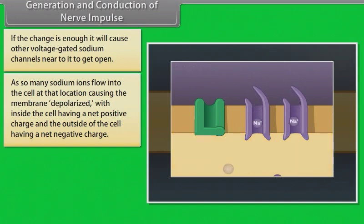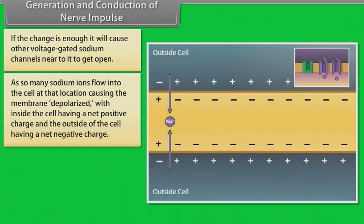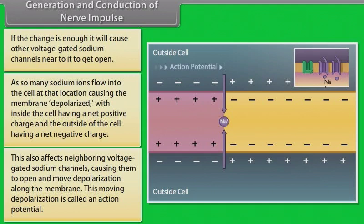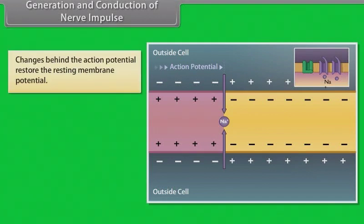As so many sodium ions flow into the cell at that location, the membrane becomes depolarized, with the inside of the cell having a net positive charge and the outside having a net negative charge. This also affects neighboring voltage-gated sodium channels, causing them to open and move the depolarization along the membrane. This moving depolarization is called an action potential.